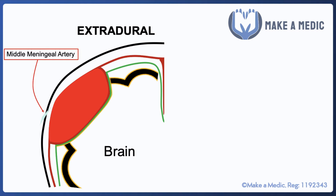A slight anomaly in the anatomy of our skull is that we have a weak point called the pterion, which is essentially where a number of bones of the skull come together, and hence it creates this weak point under which the middle meningeal artery lies. So a skull fracture due to head trauma can disrupt the middle meningeal artery and cause a bleed into that extradural space.